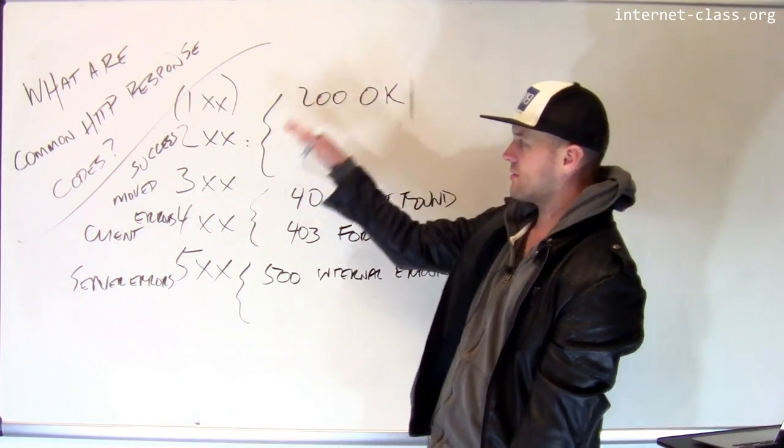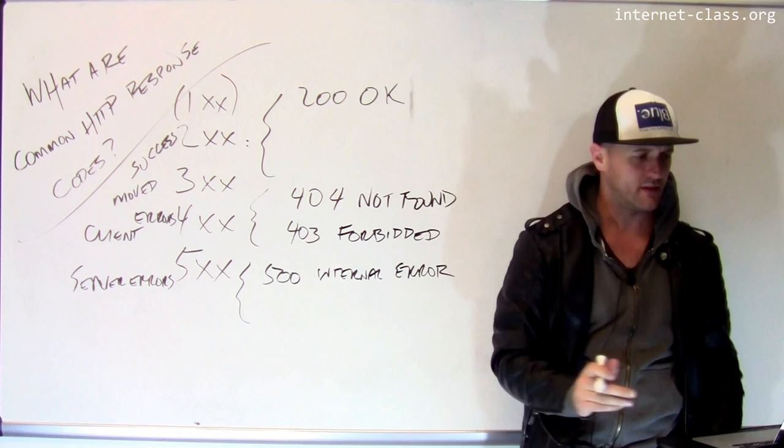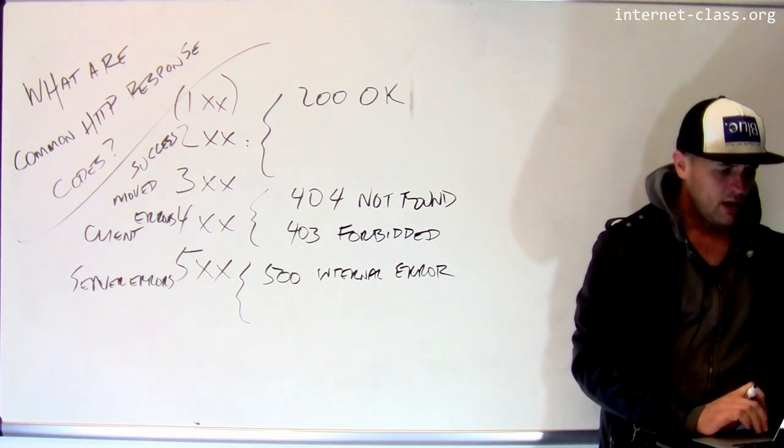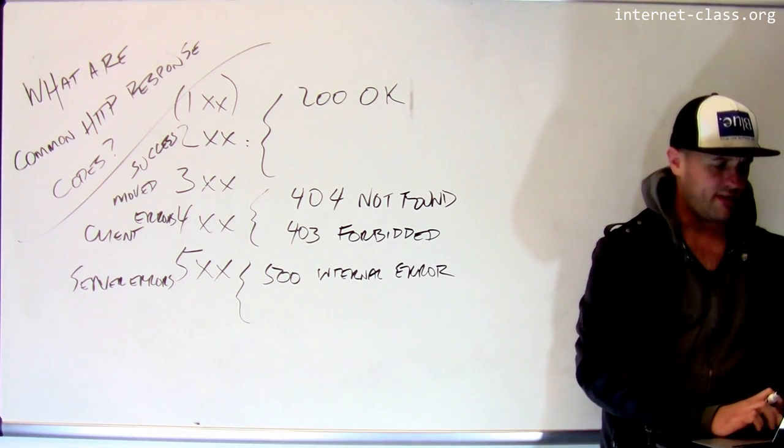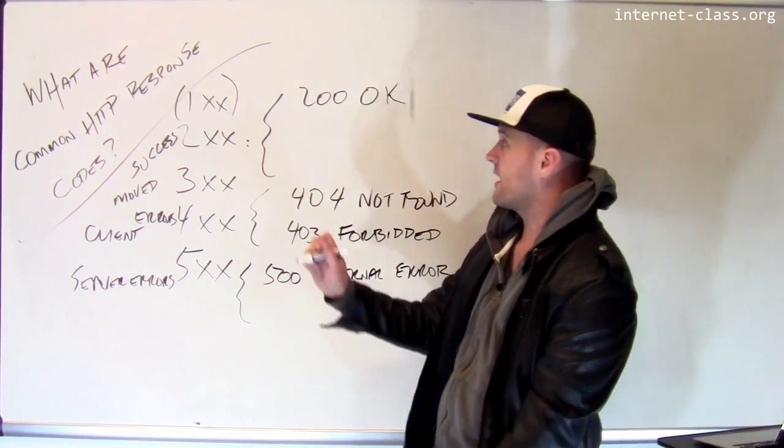Okay. So we've got our 200 level codes. There's some other types of 200 level code that are also useful in certain situations. There was one other one I wanted to talk about. Which one was that? That is the 204.